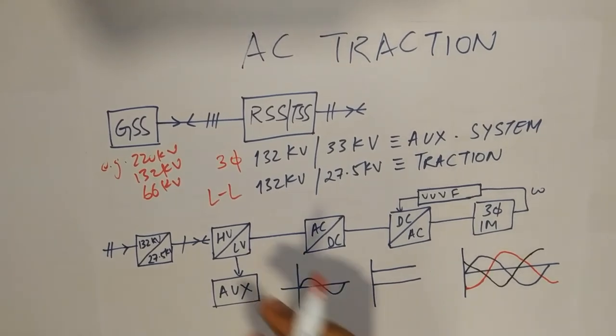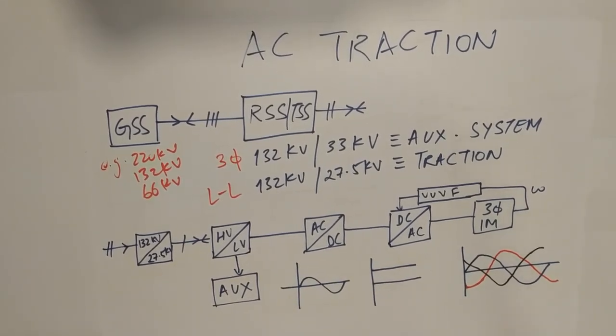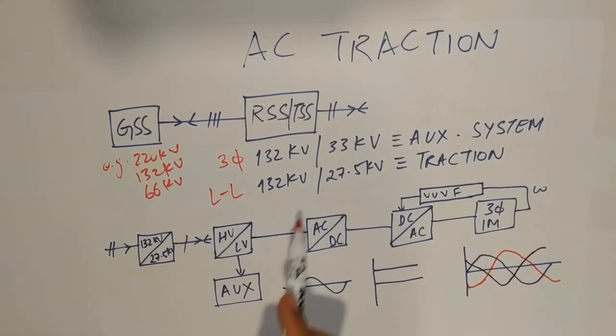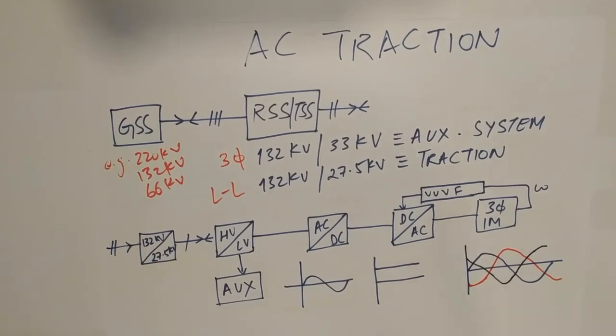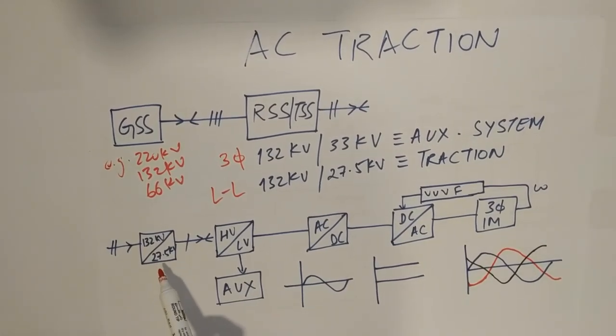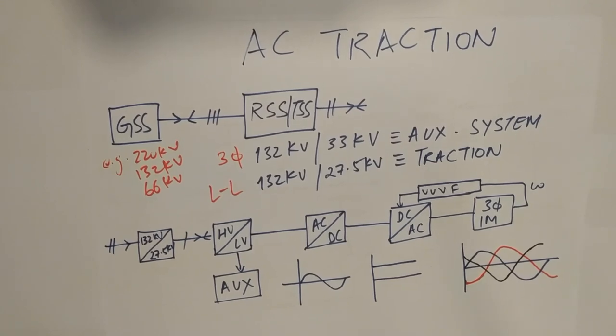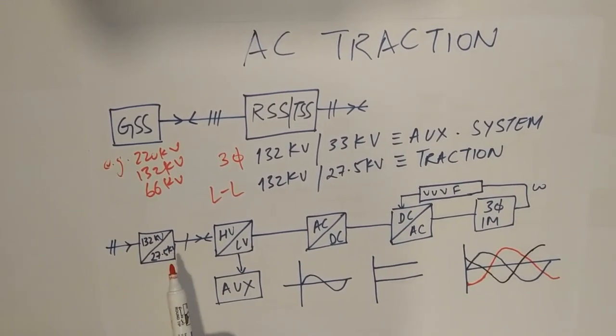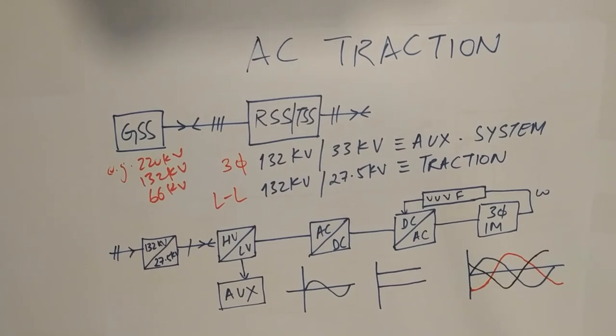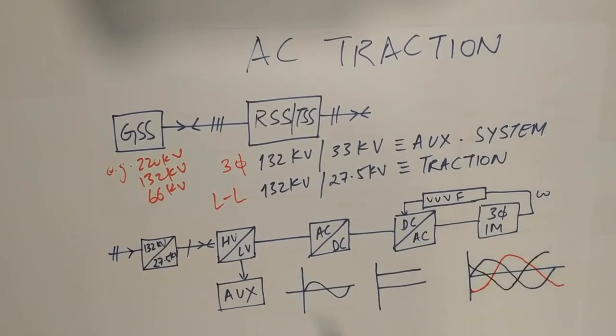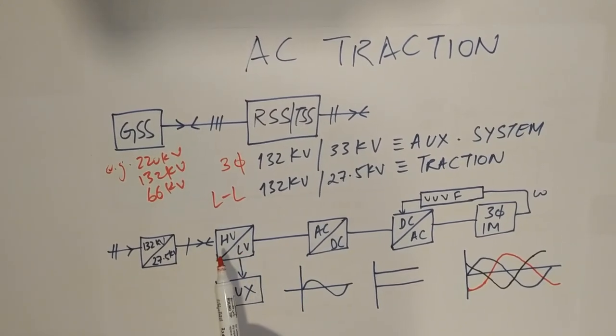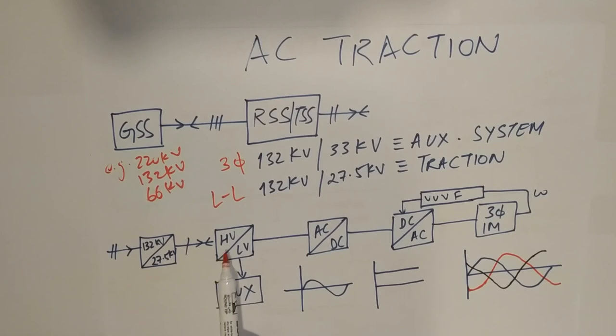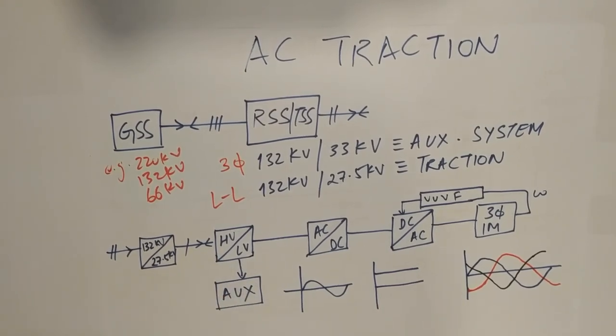So, once we get this 132 KV supply, then this line-to-line supply of 132 KV is converted into 27.5 KV via traction transformer. Then, this 27.5 KV is fed to the overhead contact system and running rails. The train is running between this and then inside the train, this high voltage of 27.5 KV gets converted into a low voltage.